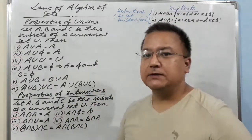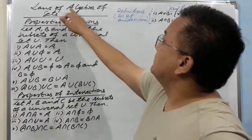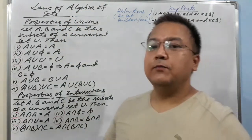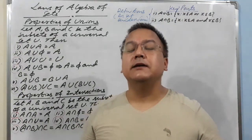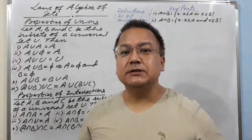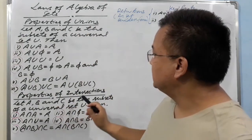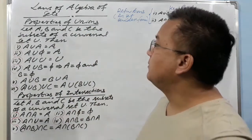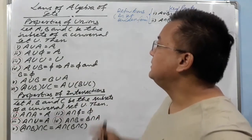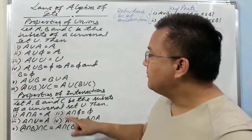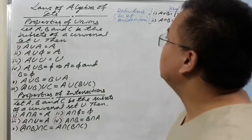Today I have taken properties of unions in laws of algebra of sets. Before this I have also made one video where I discussed the properties of inclusion and ecletic relations of laws of algebra of sets. Today I have taken properties of unions and properties of intersections. These are very important. I'll teach you the properties of unions, and once you know the procedure, you can complete the properties of intersections also.